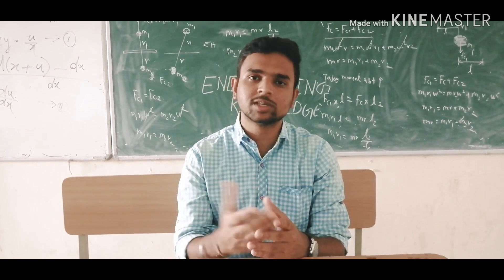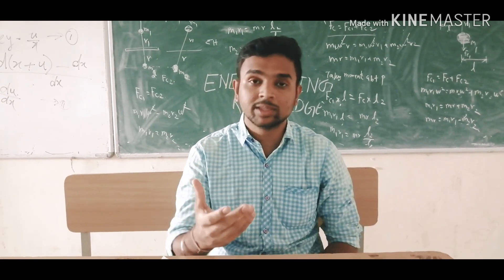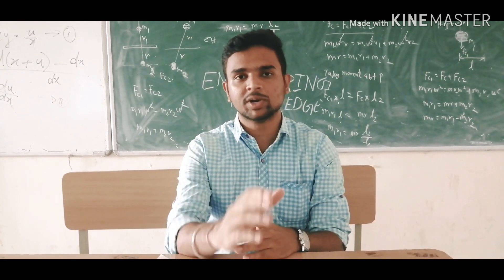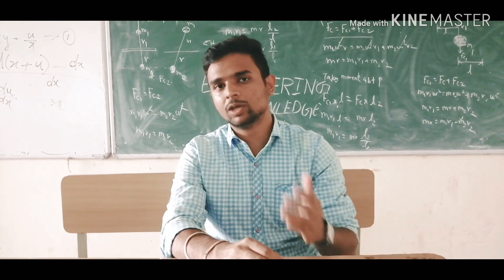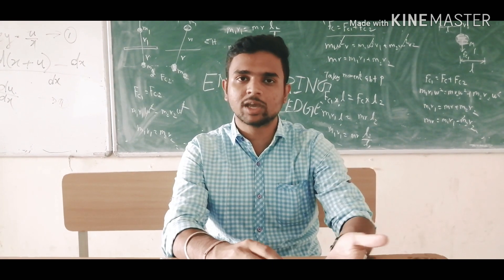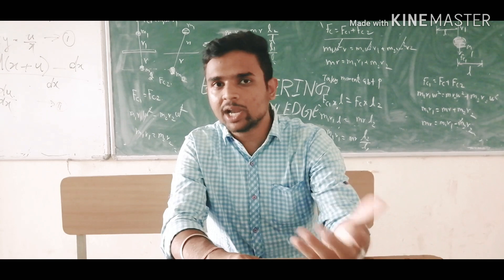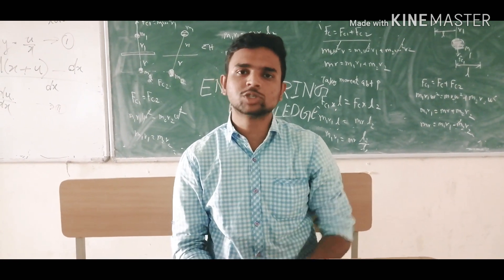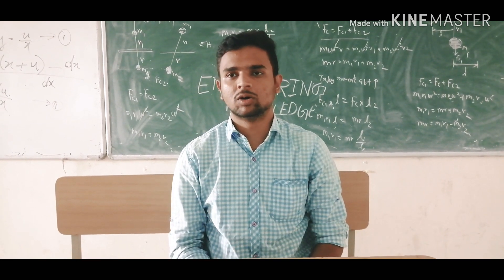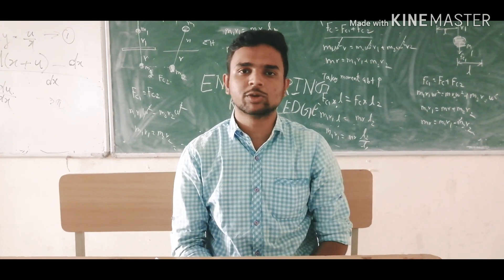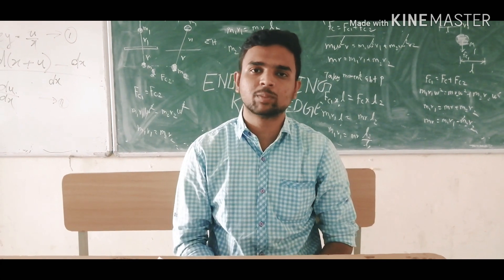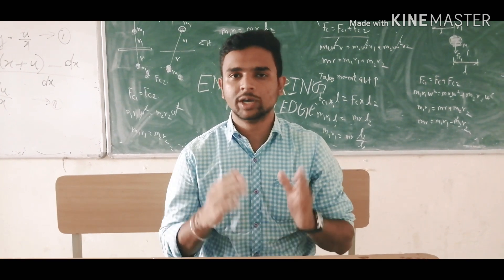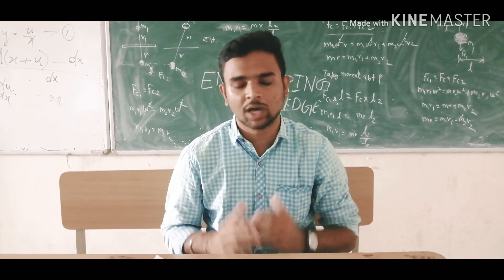The last step in the interview was an Extempore round to assess your speaking skills and communication skills. You had to select a number from 1 to 77, and the topic mapped to that number was given to you. My topic was Child Labour, and I had to speak on it. Some of my friends struggled in the Extempore and faced rejection because of communication skills. Since there was no group discussion round, this Extempore served that purpose.